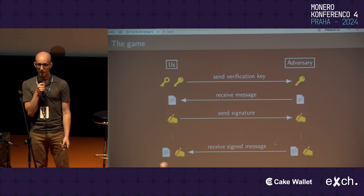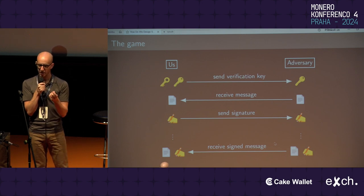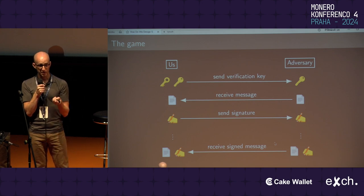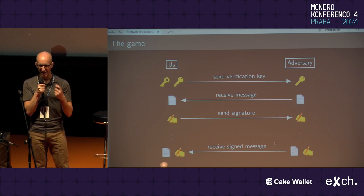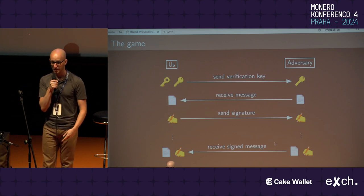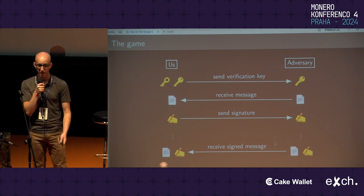Then, at the end of the game, the adversary needs to give us a new message that it has not sent to us before, and a claimed signature. The adversary wins the game if that signature is valid. So all it has is the verifying key and a bunch of signatures it asked us to produce, and then it must produce a new signature via forgery.